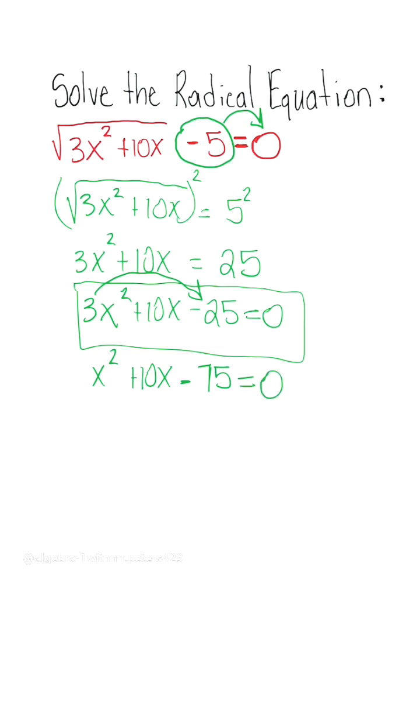When we're at this step, we're looking for two factors that multiply to give us 75, add to give us 10. So we're going to have x plus 15 times x minus 5.